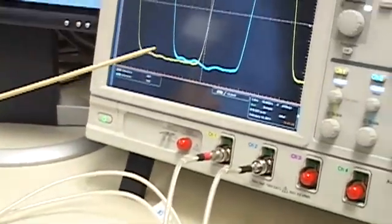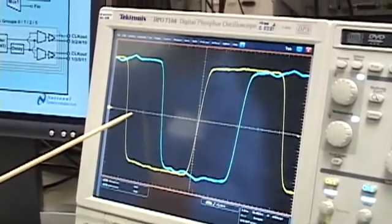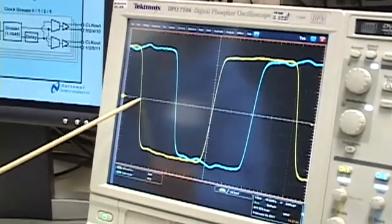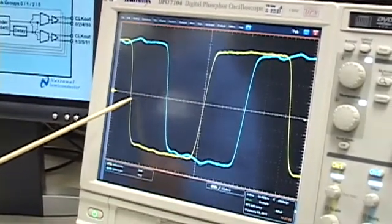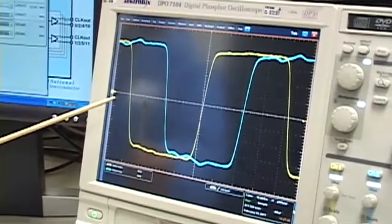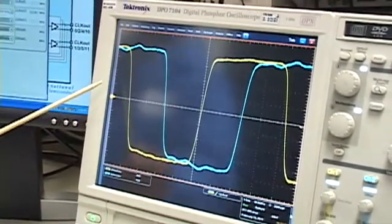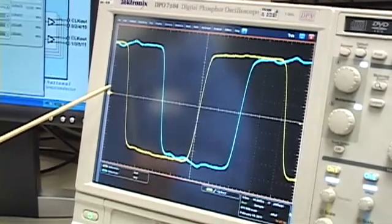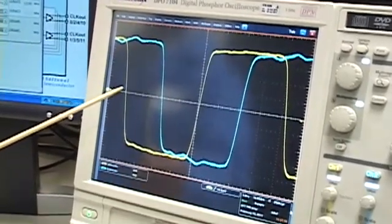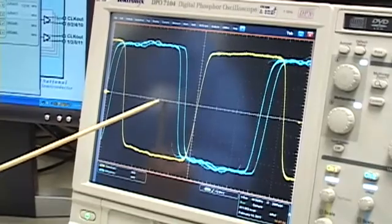As you can see, due to cable mismatch and trace mismatch, we're seeing a significant skew between the two clocks. Using the LMK programming software called CodeLoader 4, we can then program the digital delay blocks in order to achieve coarse adjustment.